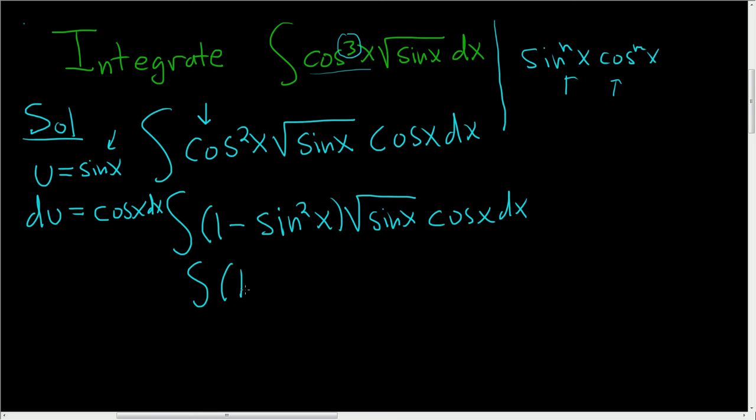So making the substitution, we'll end up with 1 minus u squared, right? Because sine x is u. Square root of sine x is u to the 1 half because we do have to distribute at some point. And then this piece here, this is your du.